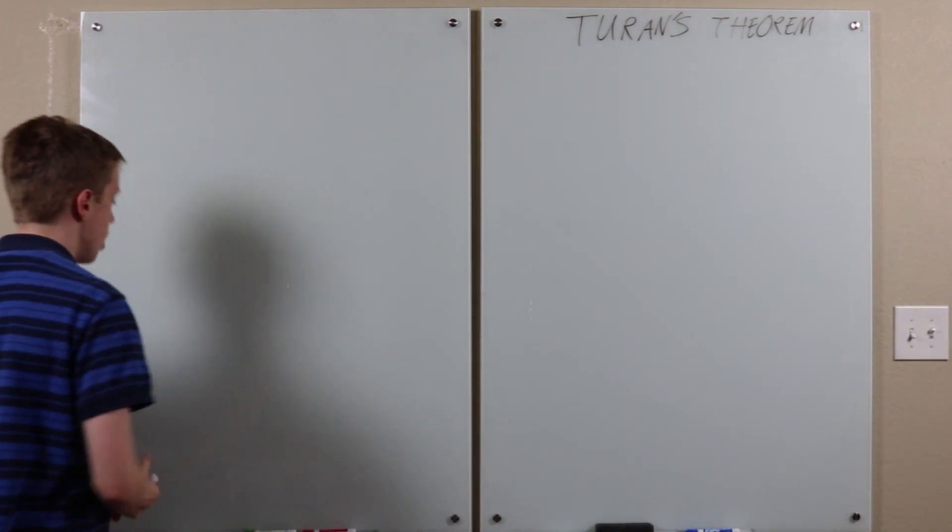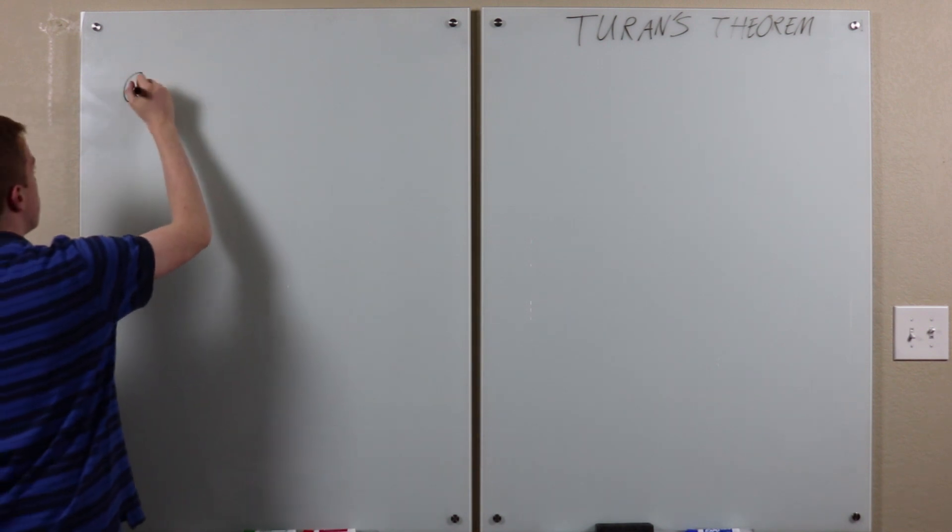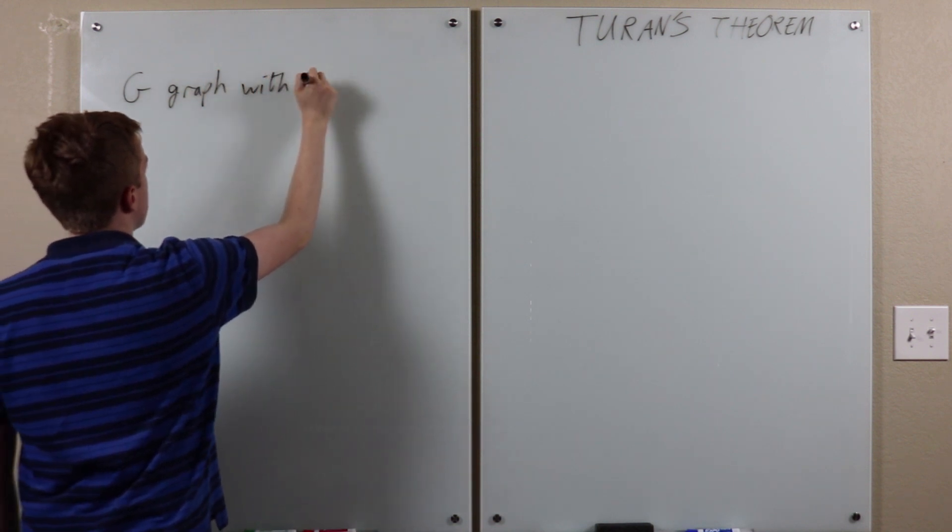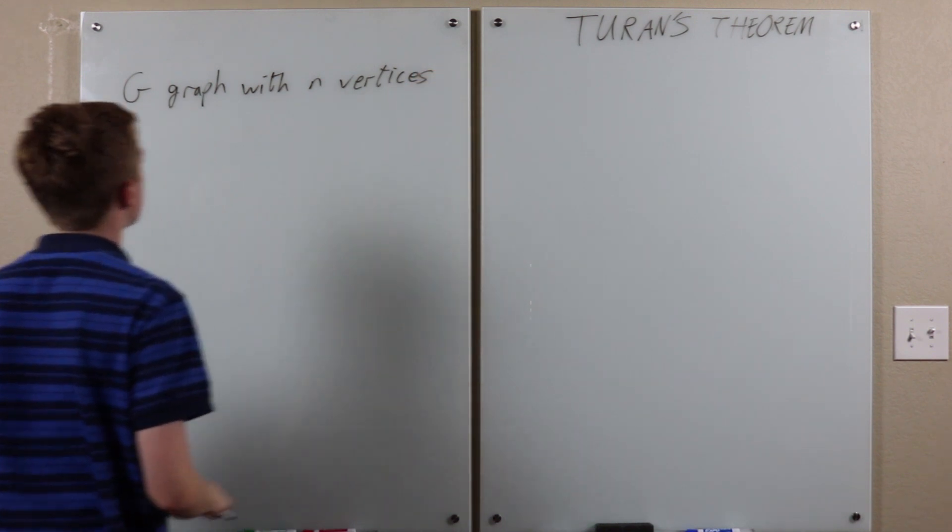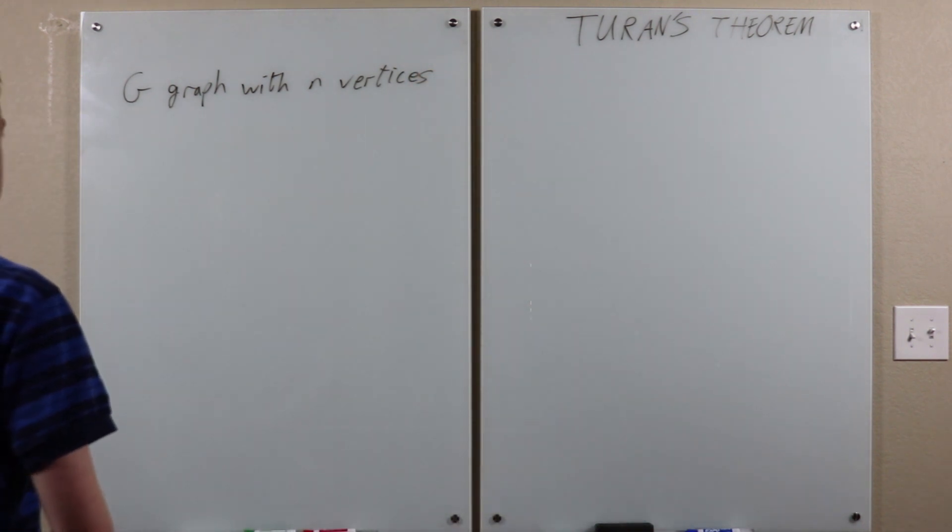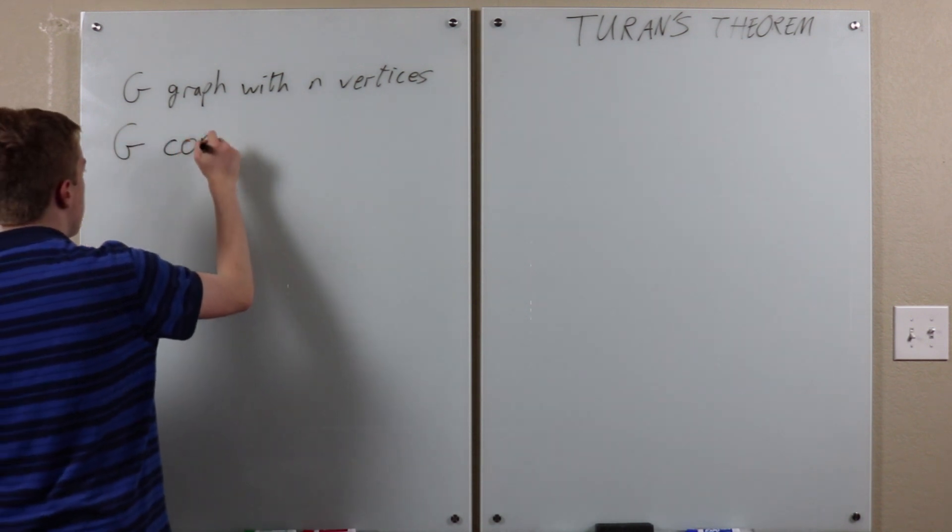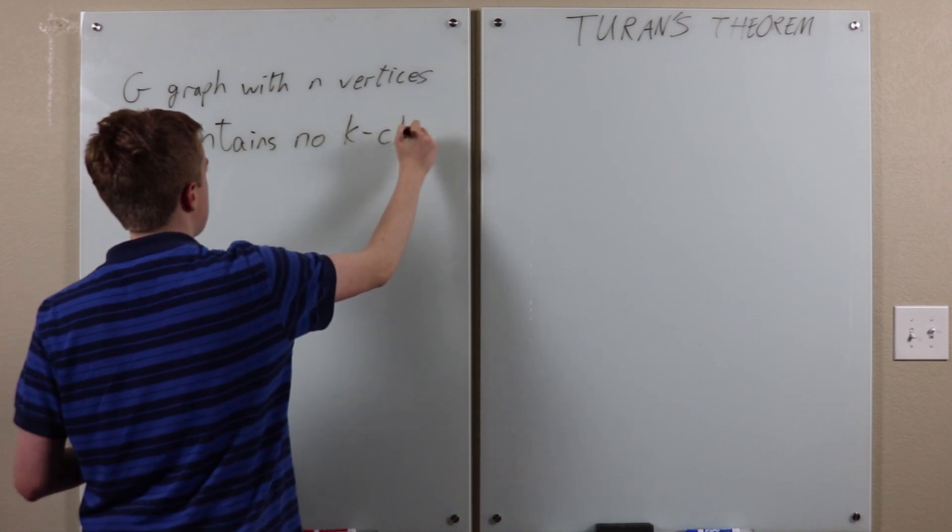Well, it says that if we have a graph G with n vertices, and it contains no k-clique, any two of which are connected by an edge,